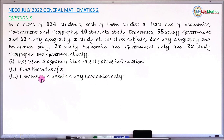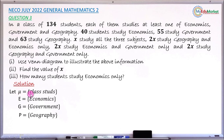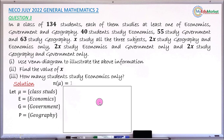So these are the three questions we have to answer. Let's attempt to answer them together. For the solution, we first define our sets. Let U be the universal set representing the total number of students in the class, that is 134. Let E be the set of students that study economics, G be the set of students that study government, and P be the set of students that study geography. I'll now draw a large rectangle to represent the universal set of 134 students, then use circles to represent each of the three sets.